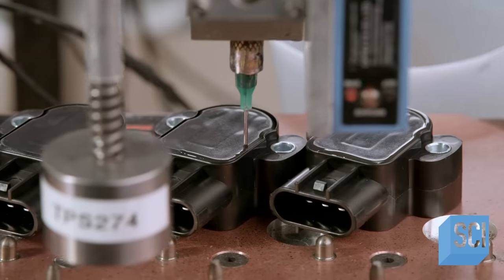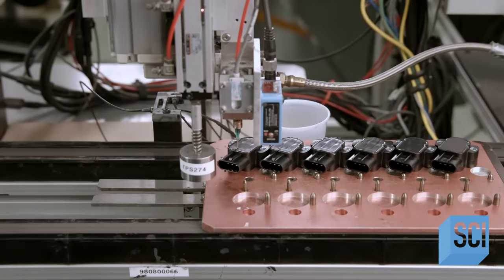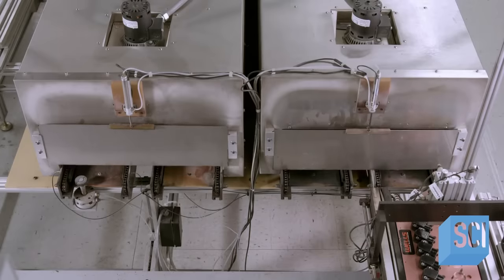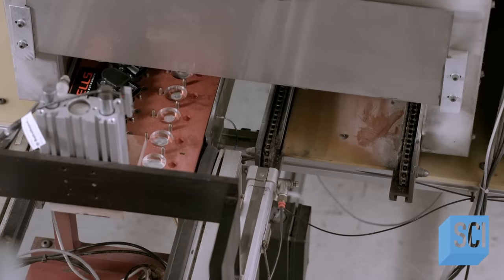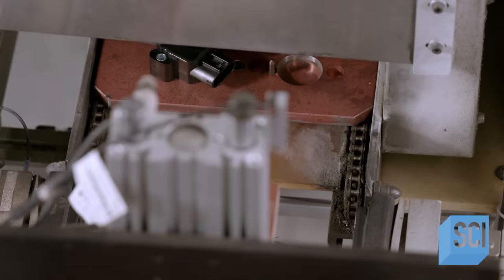A robot pipes silicone adhesive on the welded seam to create a double layer of protection. The sensors ride on a conveyor that goes through an oven. This cures both the silicone on the welded seam and the glue inside to secure the magnet to the holder.